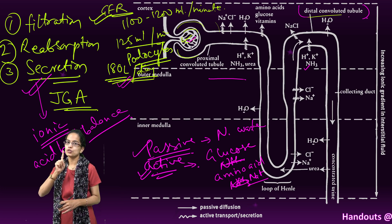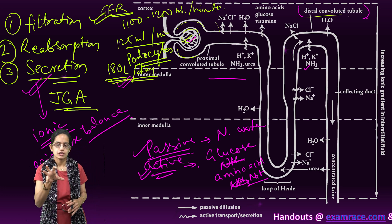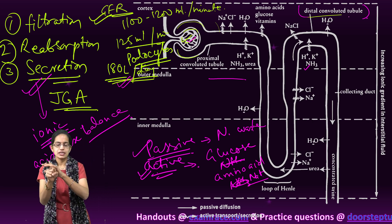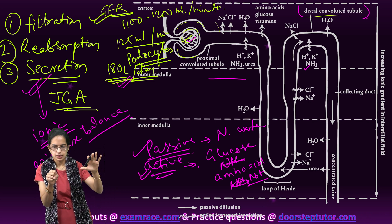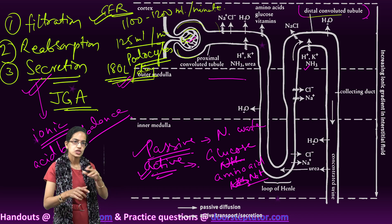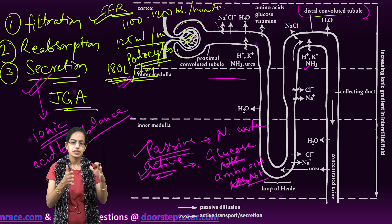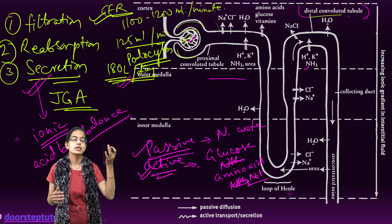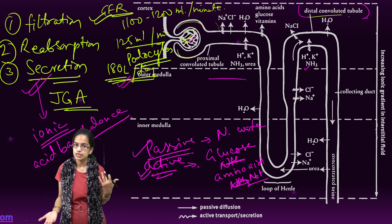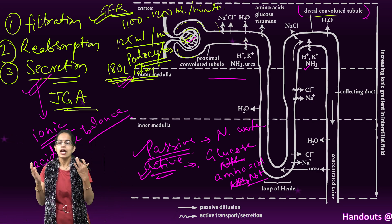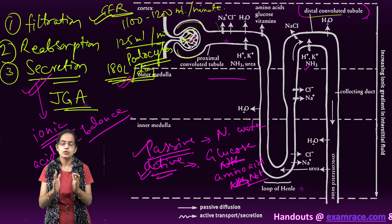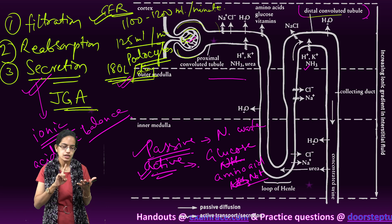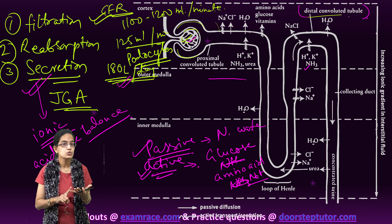To summarize, there are three processes in urine formation: first is filtration, which occurs in the glomerulus; then reabsorption in the renal tubule including the PCT and the loop of Henle; and finally secretion to maintain ionic and acid-base balance in the DCT, where hydrogen ions, potassium ions, and ammonia are released into the filtrate.